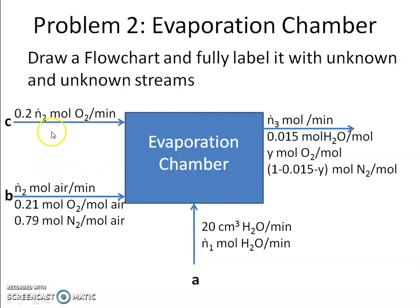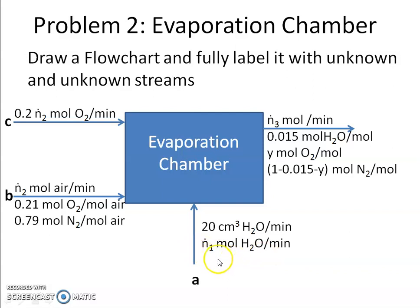In example problem two, the unknowns are Ṅ2, Ṅ3, y, and Ṅ1 — four unknowns. There are three components: O2, N2, and H2O, so I can write three independent balances, plus one more density relation. That gives four equations and four unknowns, which I can solve.